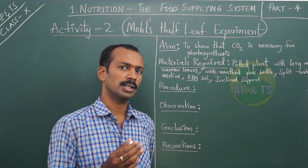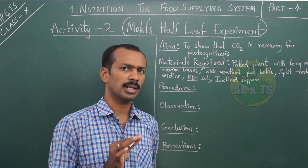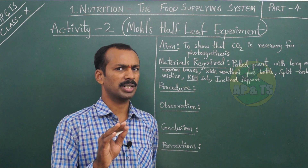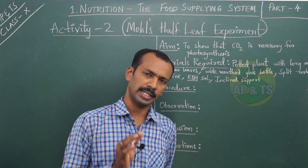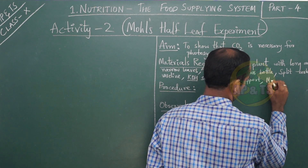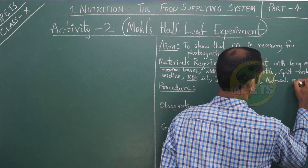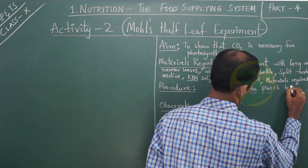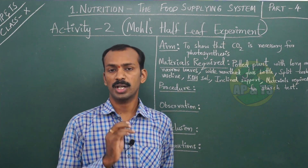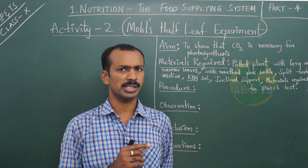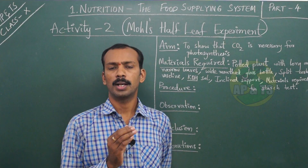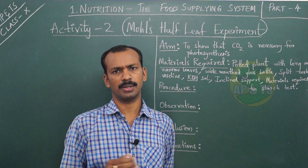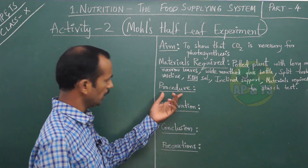Not only these, there are some more materials required. These are for the starch test. In your previous classes you have learnt how the starch test is done in leaves. The materials required for the starch test are: water bath, test tube, alcohol (methylated spirit), Bunsen burner, and iodine solution.